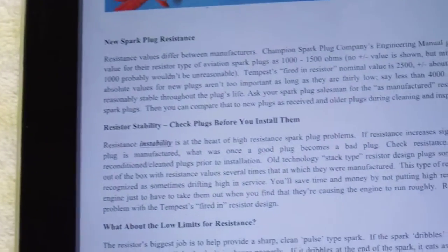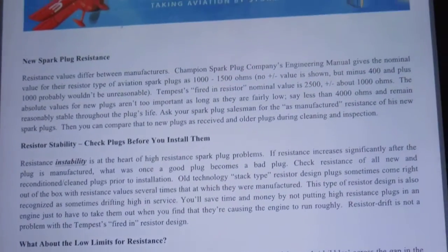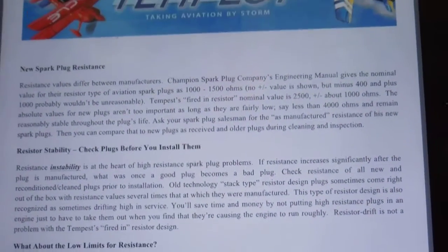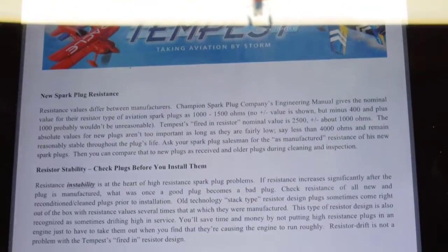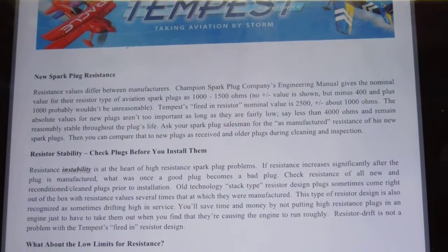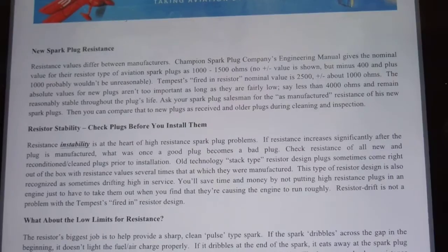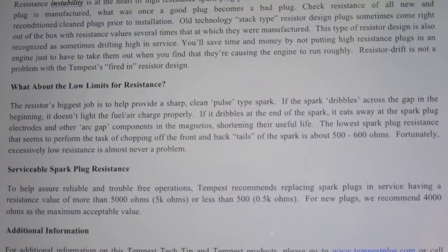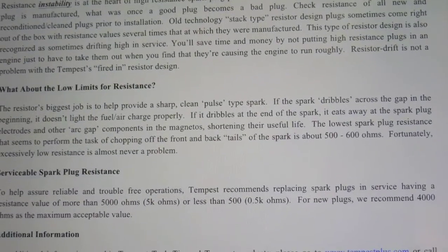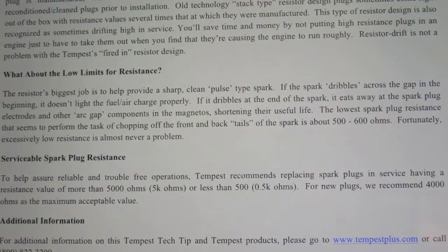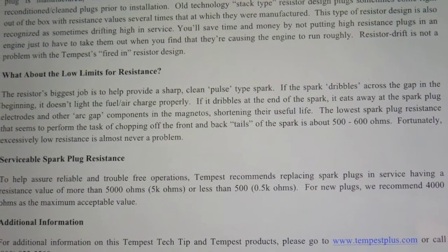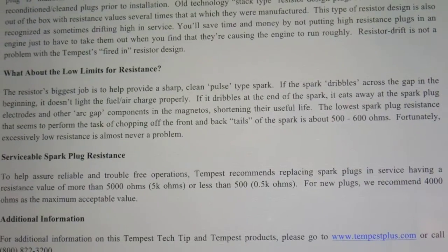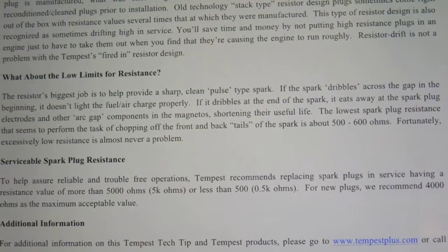There's a little bit of controversy about whether you can check them or whether you can't with an ohm meter. Tempest says you can, and Tempest says that Champion's engineering manual says that you can. So the long and the short of it is, it looks like about 4,000 to 5,000 max is ohms. And then 5 to 600 is the minimum ohms.